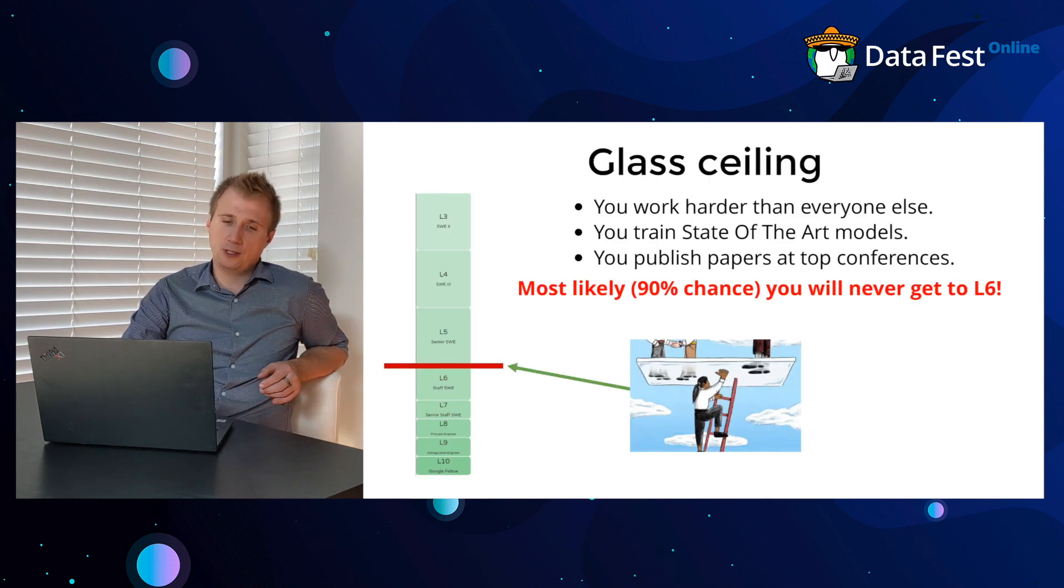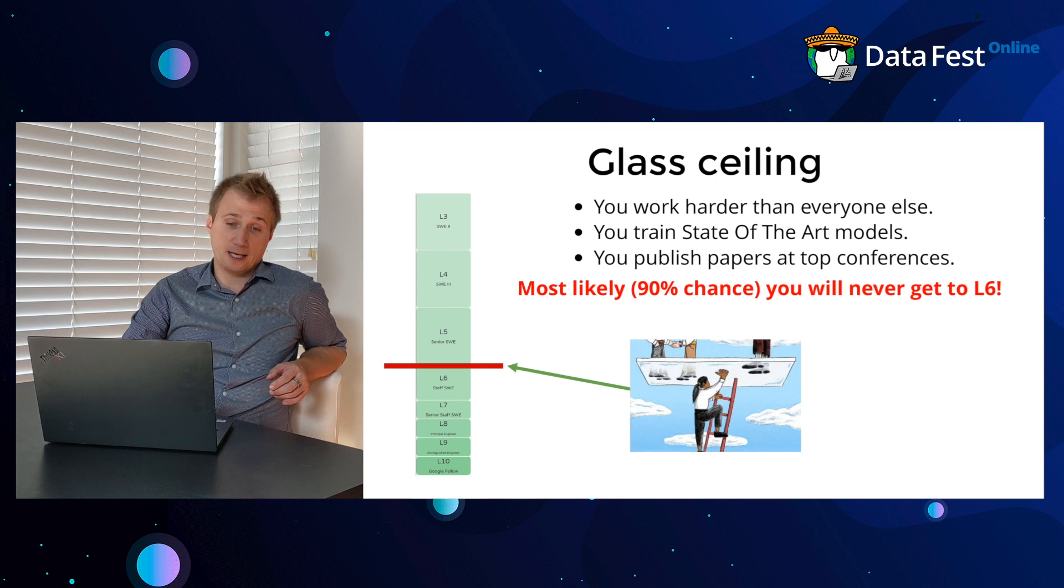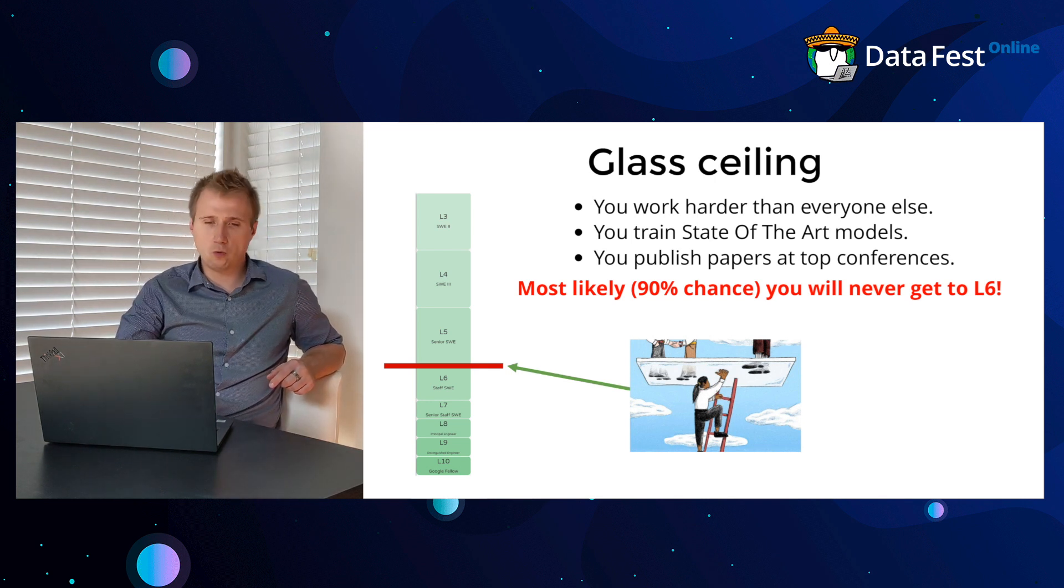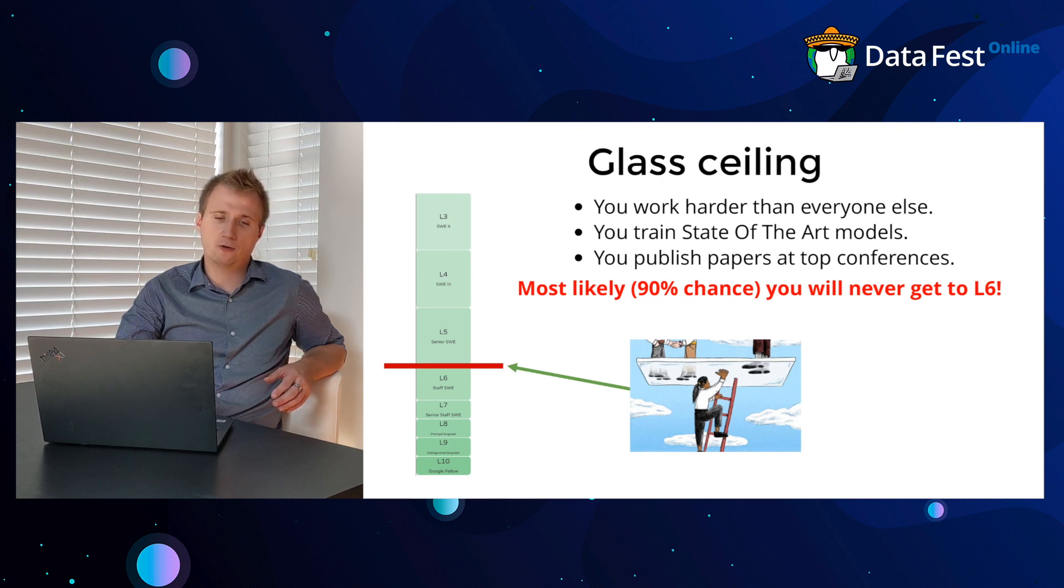On the left you see a column career path at Google, Facebook, Lyft, Uber. It's widespread where three means junior, four middle, five senior and six is staff.